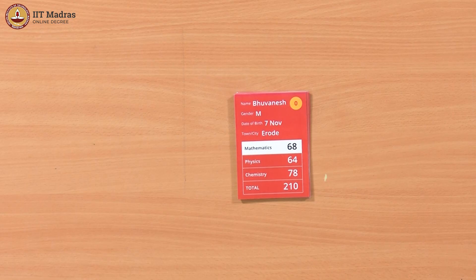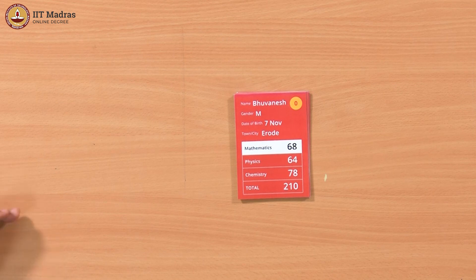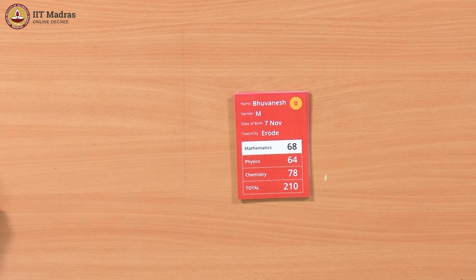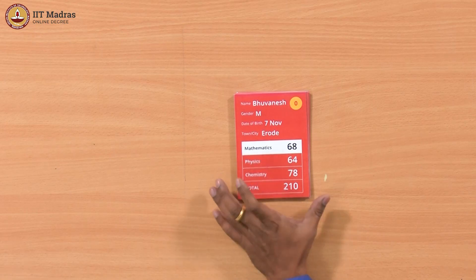It is better to keep track of the card number where we saw the maximum mark. So every time we see a new card, we will compare the marks. And if we update the maximum, then we will also simultaneously update the card number.